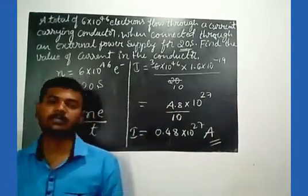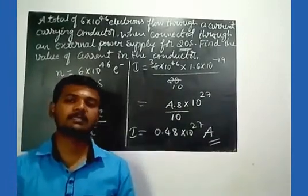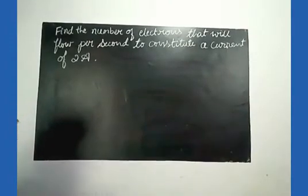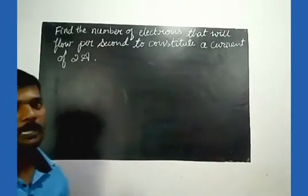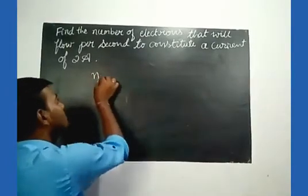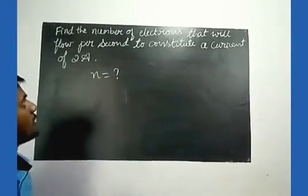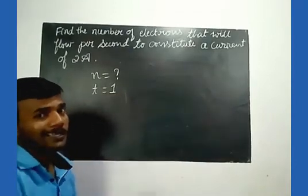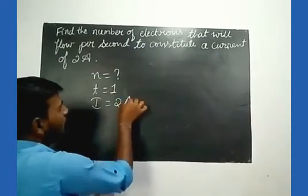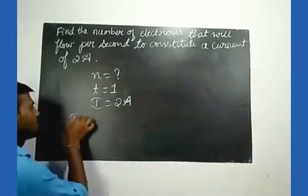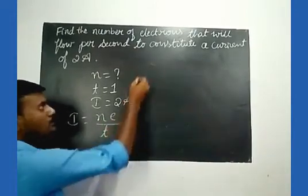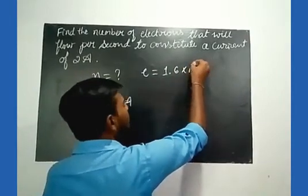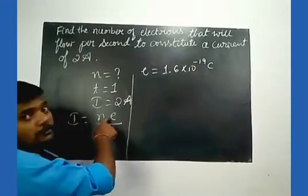Let us discuss one more example: find the number of electrons that will flow per second to constitute a current of 2 ampere. Here you need to find n, the number of electrons. Time is given as 1 second, current I = 2 ampere. We know the relation I = ne / t, and the magnitude of electric charge e = 1.6 × 10 to the power minus 19 coulomb.